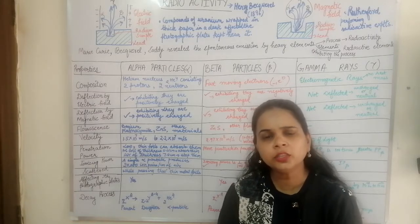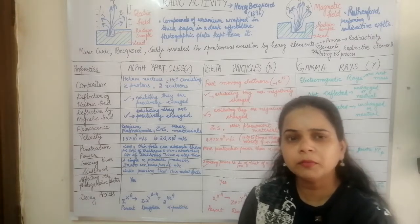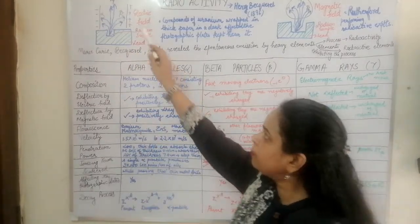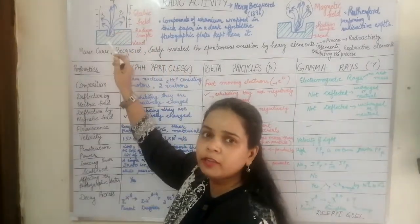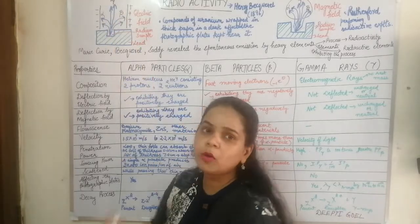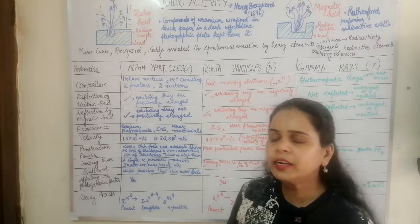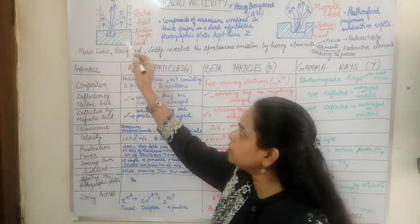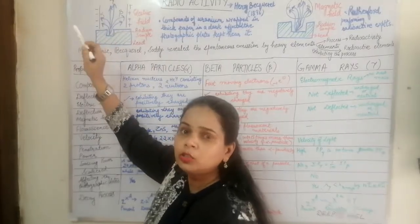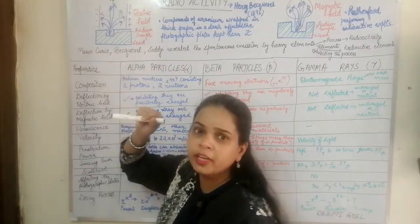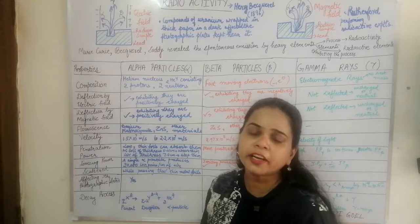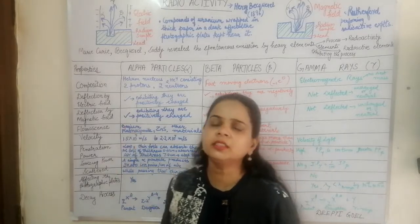This radioactivity was then studied further by Rutherford and his co-workers. They placed radioactive radium between the plates of an electric field and observed that some positively charged particles were attracted towards the negative plate, some negatively charged particles were attracted towards the positive plate, and some particles went undeflected.